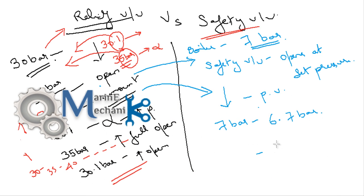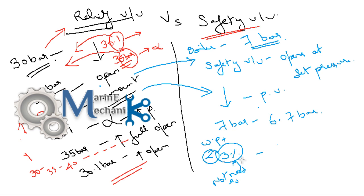As a thumb rule, safety valves should be set at no more than 3% above the working pressure — that is the maximum setting. The exact rule states the safety valve set pressure need not exceed 3% above working pressure. However, it recedes 4% below working pressure depending upon the design. For a 7 bar working pressure, 4% below that is approximately 6.72 bar, so that is the pressure at which it recedes.